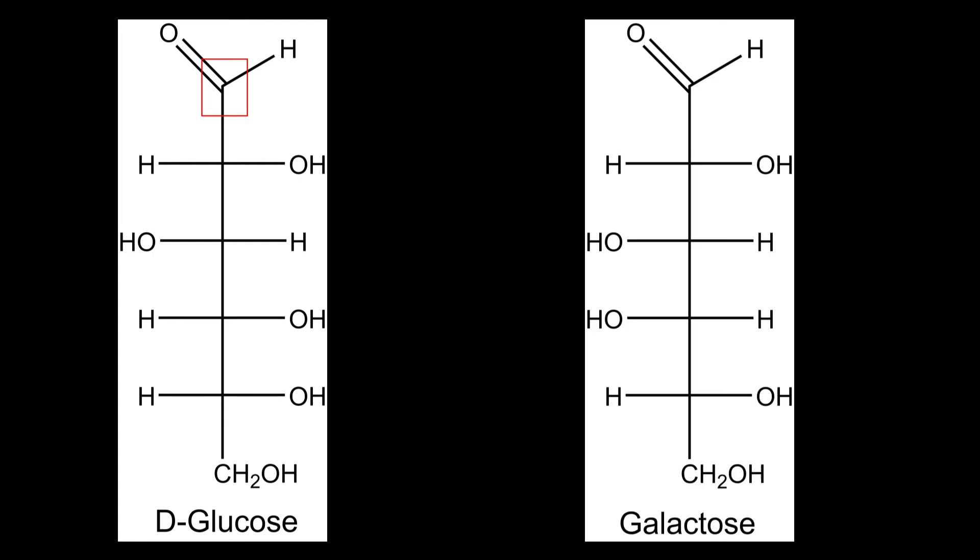In the Fischer projection the monosaccharides are drawn in the open chain form, where the carbon atom with the highest oxidation state is placed at the top. The monosaccharides are differentiated by the OH groups which are pointing left or right. This is the reason why there is a maximum number of different sugars which have the same amount of carbon atoms.